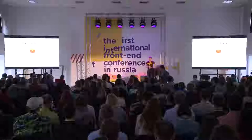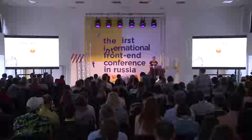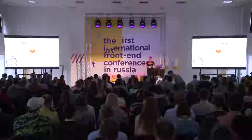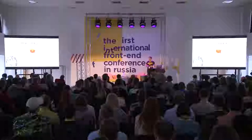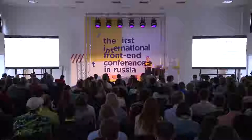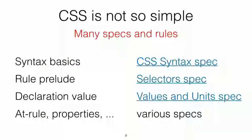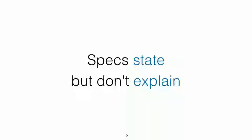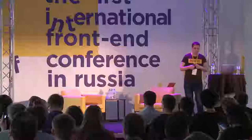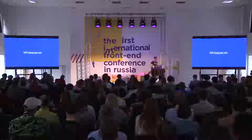What I'm talking about is that many developers think CSS is quite simple, because it's just two common syntax rules, and that's all. But in fact, CSS is not so simple, because too many specs and rules exist. They define different parts of CSS, and we need to learn a lot of things to understand it correctly. One of the main problems is that the spec actually states something but doesn't explain it. So I want to talk to you a few stories. The first one is about whitespaces.